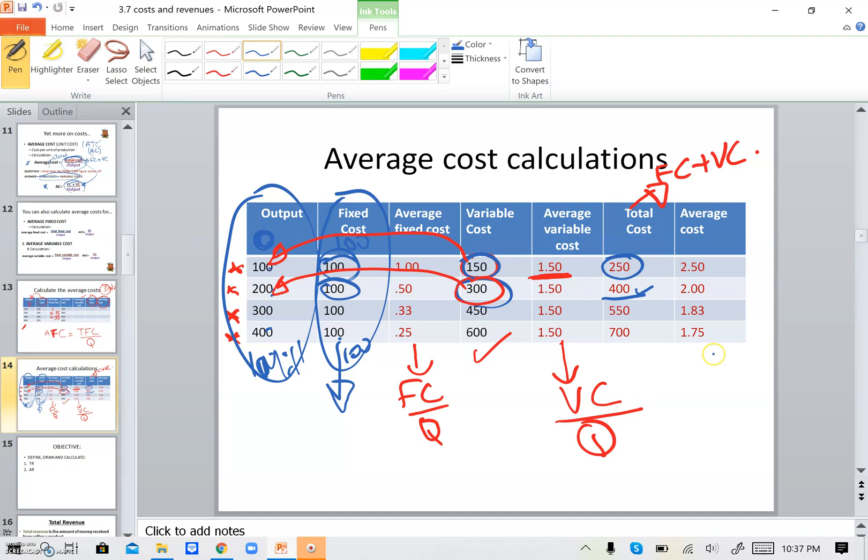Average cost, what they did is total cost over quantity. So for this point here, I'll write it in green. I'll show you in green what we did. It would be 250. So this one, the total cost divided by the output. 250 divided by 100 would be 2.5 and so on. You can find it in your book on page 237. They will also explain what is meant by average cost.